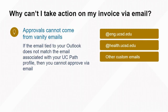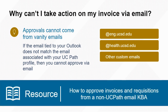Before we review these options, it's important to note that if you are using a custom email other than your official UCPath email, you will not be able to use the approve, reject, or request info options in Outlook. Instead, you may refer to our Knowledge Base article on setting up approval through your Gmail.